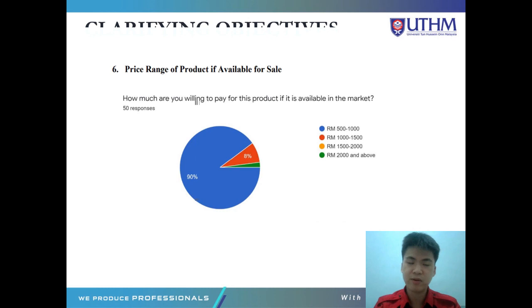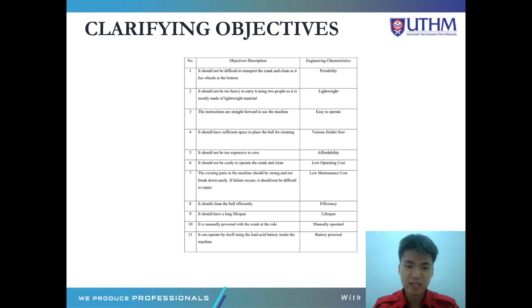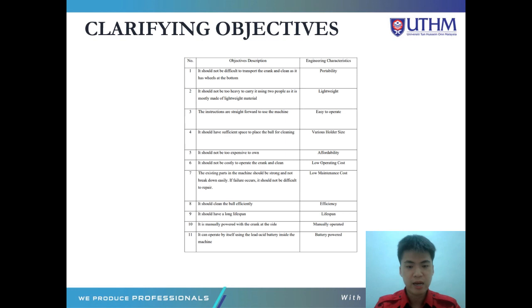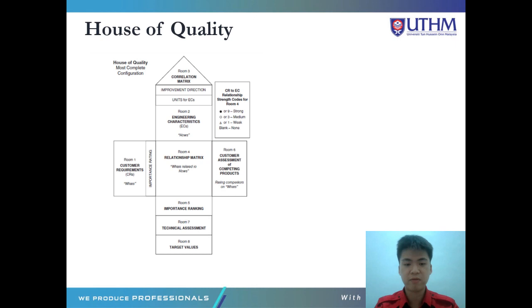For clarifying objectives, we found that the product should not be too difficult to transport, should not be too heavy to carry, instructions should be straightforward, it should have sufficient space for cleaning the ball, should not be too expensive or costly to operate, excessive parts must be easy to find, it should be efficient when cleaning, and should have a long lifespan. It can be manually powered and cranked on the side, or operated using a battery. This is the Quality Function Deployment, and this is the House of Quality table that we made.